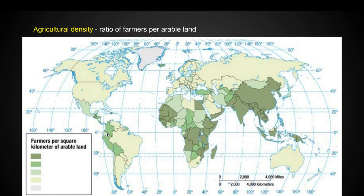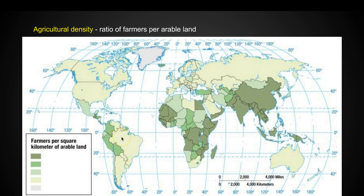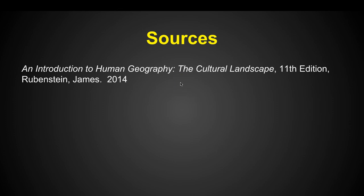Agricultural density — the ratio of farmers per arable land — shows that in India and China, large amounts of the population are farmers, so the ratio is more equal with most people working on arable land. In contrast, Brazil and the United States and places in Europe have most people in a developed, urban situation, so there are very few farmers. That's a look at Key Issue 1.